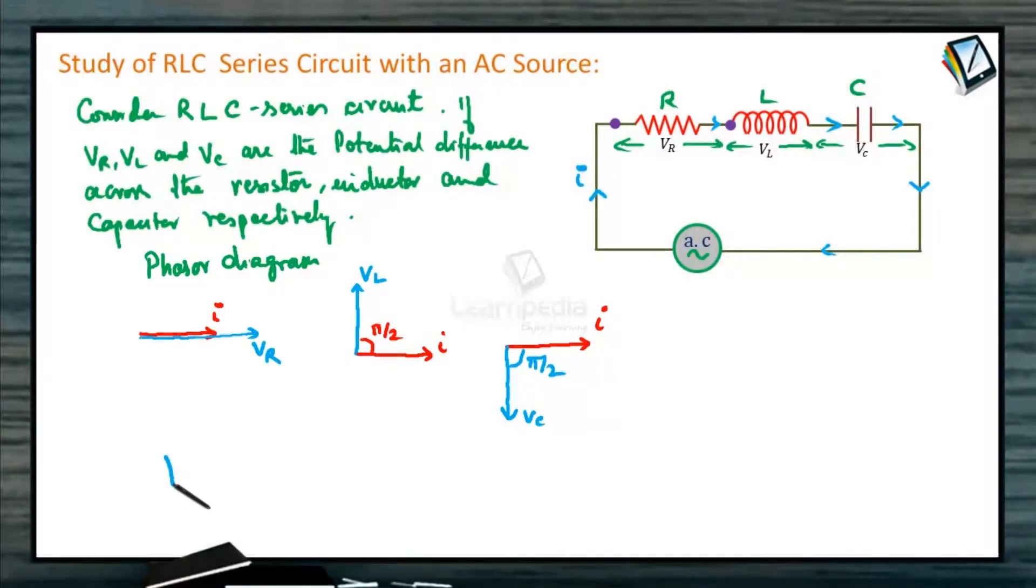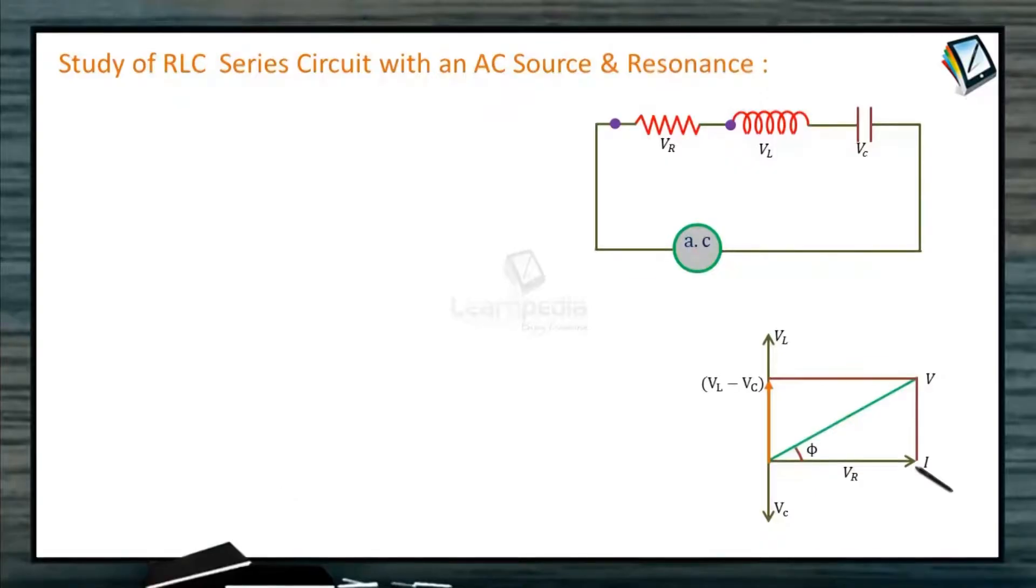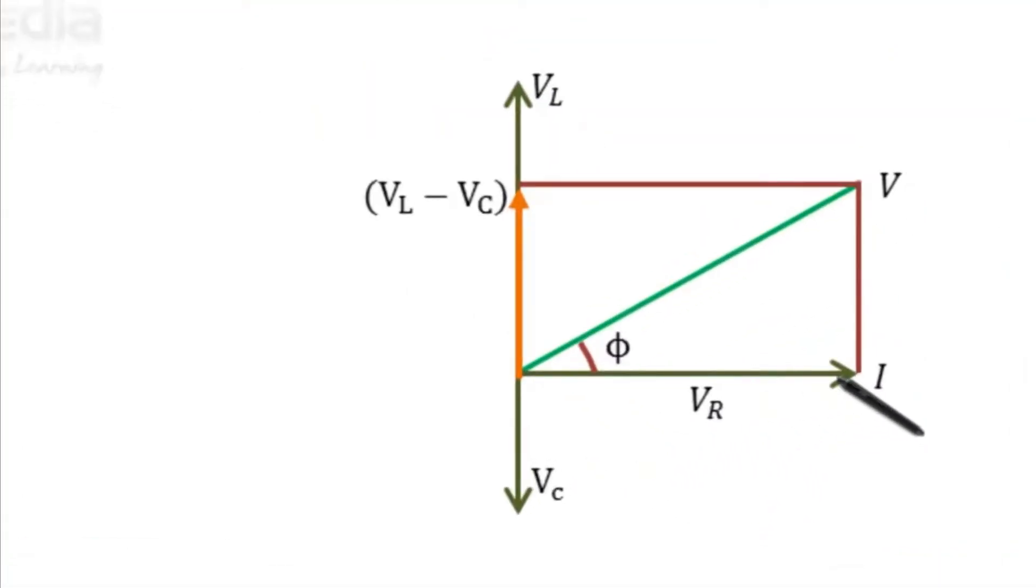So the total potential across the RLC circuit will be potential across VR vector, VL vector plus VC vector. We choose by phasor diagram. So we can assume, if this is the direction of current, VR also in the same direction. VL in the same direction. VL is ahead of phase pi by 2. VC is lagging behind phase pi by 2. So merging all the three figures together, we get this figure.